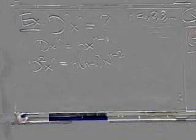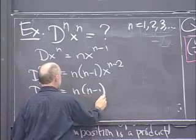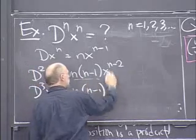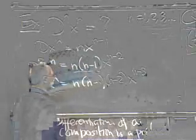Shall I do one more? d cubed x to the n is n times n minus 1, that's the constant from here, times that exponent, n minus 2, times 1 less, n minus 3, that's the new exponent.